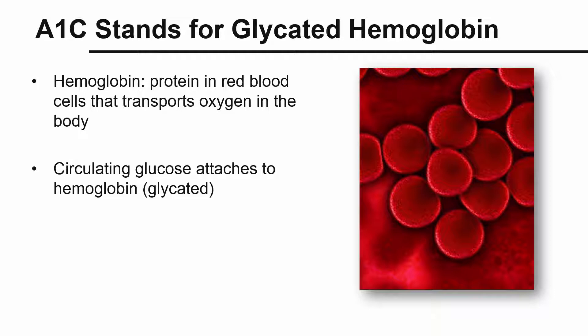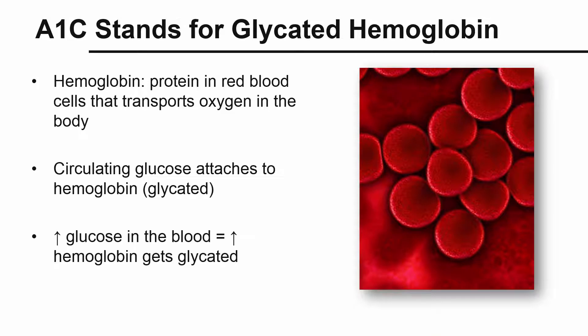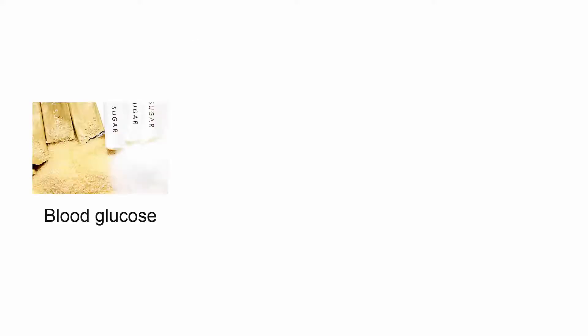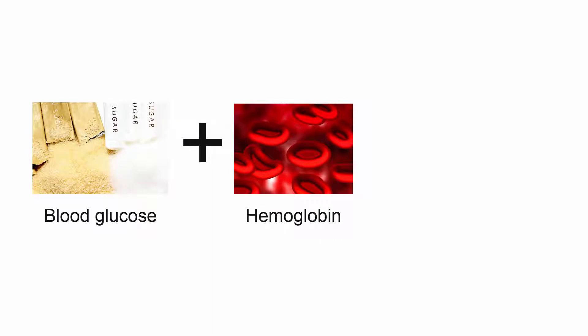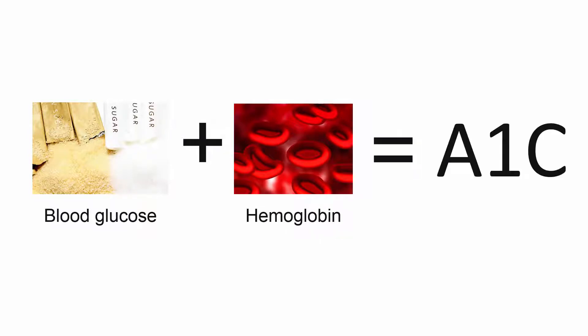This is what is measured by your healthcare provider. The higher the level of glucose in the blood, the more hemoglobin gets bound by glucose. The basic concept is that your blood glucose combines with hemoglobin in your red blood cells to form A1c.